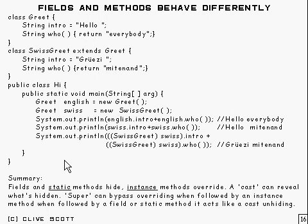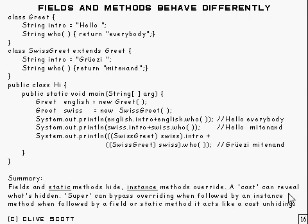It's a rough summary of what we've got so far. Fields and static methods hide, and instance methods override — that's the different sort of behavior you get. A cast can reveal what's hidden. And as you can see, a cast has no effect on the overridden method, because you're getting the overridden version in both cases.